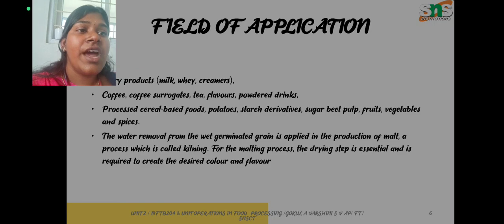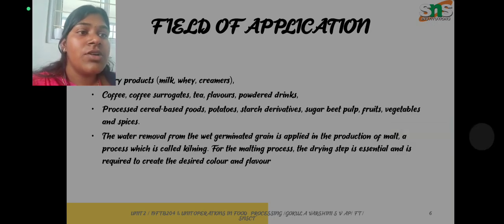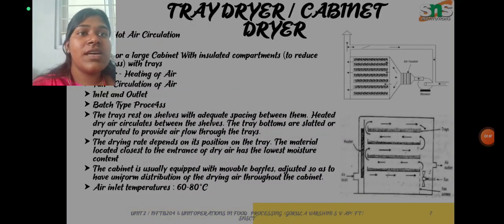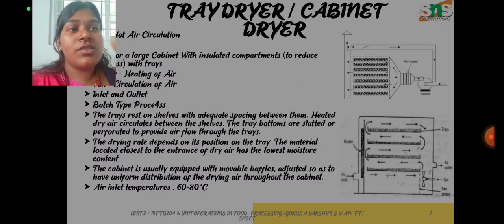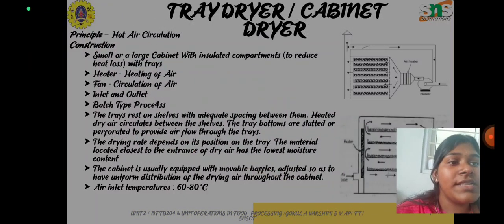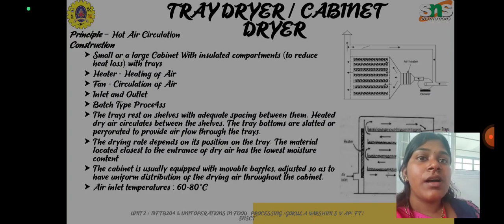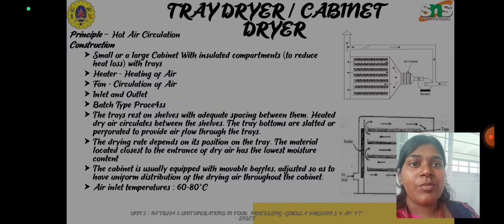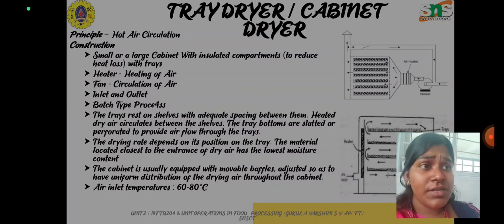We also covered the fields of application — where the drying process is incorporated in the food industry and how important the drying process is to food industries. Now let us look at the tray dryer, which is also called the cabinet dryer. The principle incorporated during the drying process is hot air circulation.